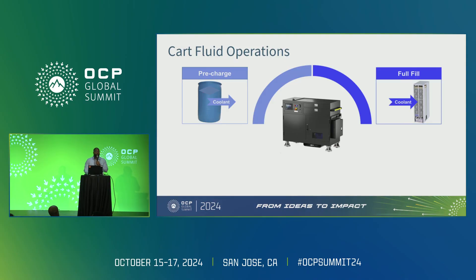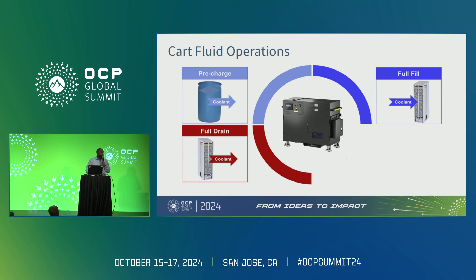Next we have full fill, which fills up an AALC rack that doesn't have any fluid in it whatsoever. You can also do smaller operations like top-off, adding maybe three to five liters of fluid to the rack, using your top-off hose or common hose. Full drain is the exact opposite of full fill — to drain all the fluid out of the rack, you use the common hose and connect either to the rear of the RPU at the bottom of the rack or to the front through the full fill drain port.